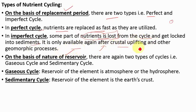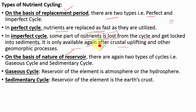If you have studied geography, you might know about the processes of plate tectonics. Through that, the earth moves and crustal upliftment and subsidence takes place. Through this process, the sediments that are currently deposited will again become available in the future. So this is an example of the imperfect cycle — for the time being, some nutrients are lost in the form of sediments.